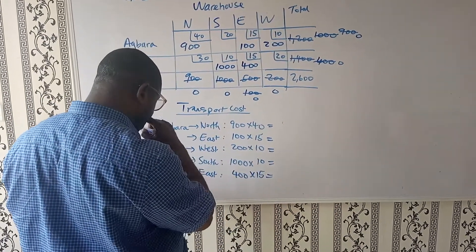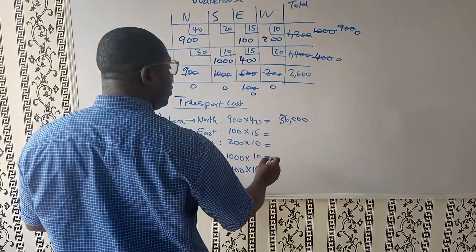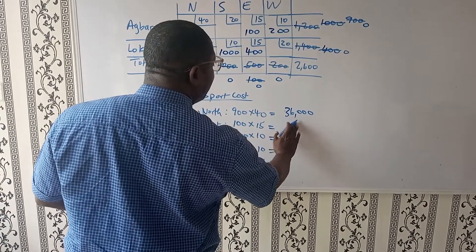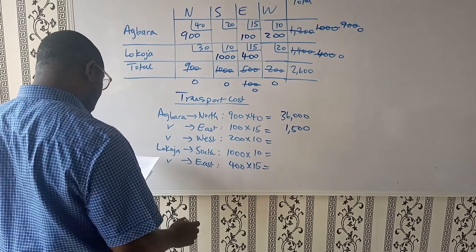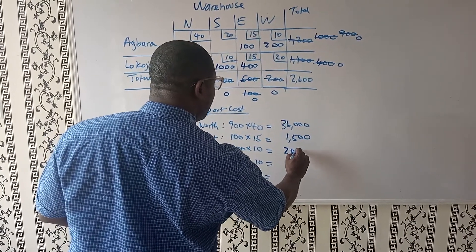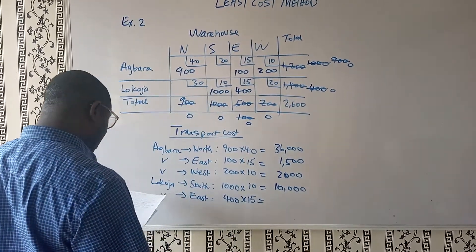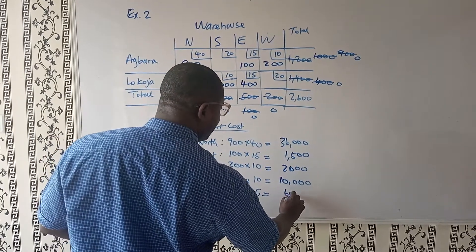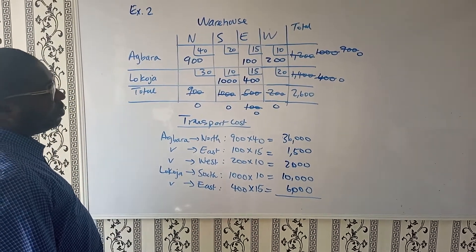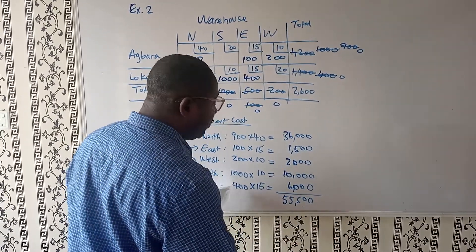So let's do the maths. 900 times 40 will give 36,000. 100 times 15 will give 1,500. 200 times 10 will give 2,000. 1,000 times 10 will give 10,000. And 400 times 15 will give 6,000. When you add this up, it should give you 55,500.